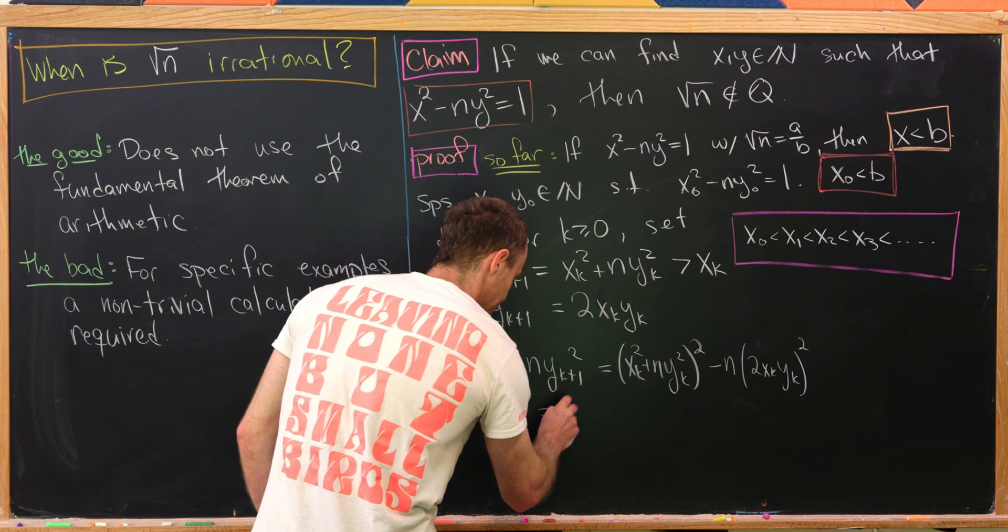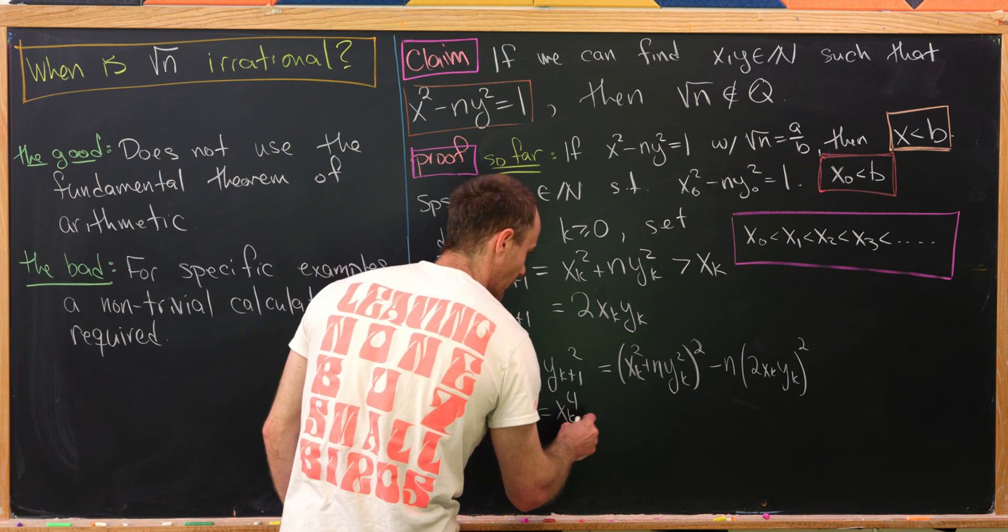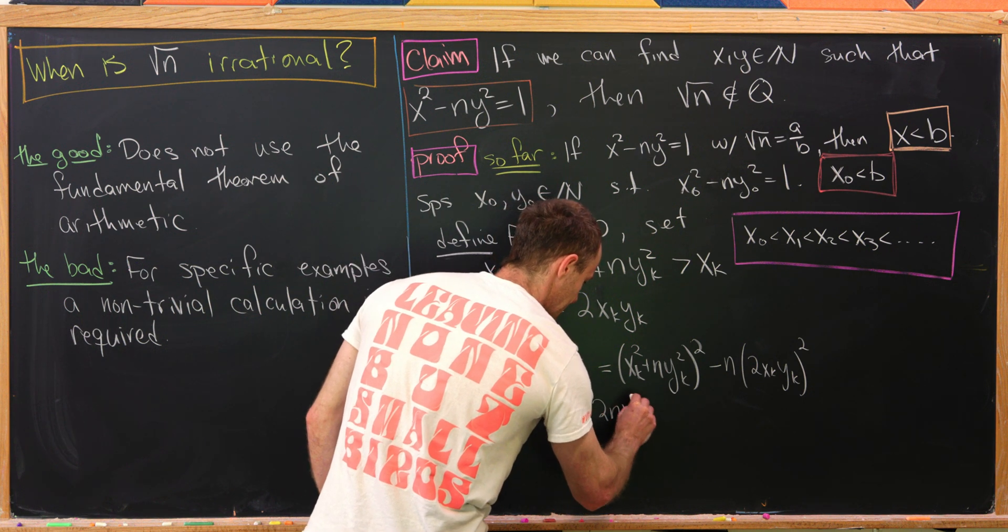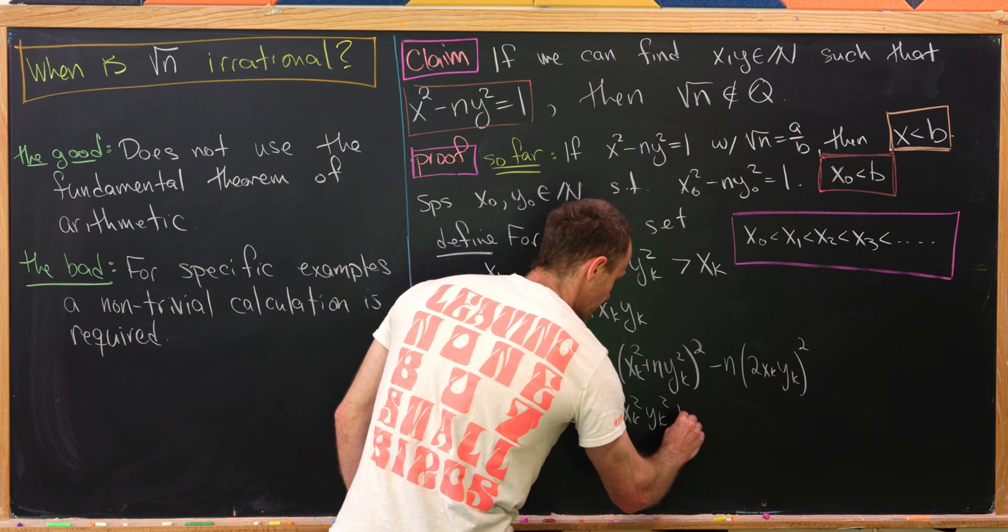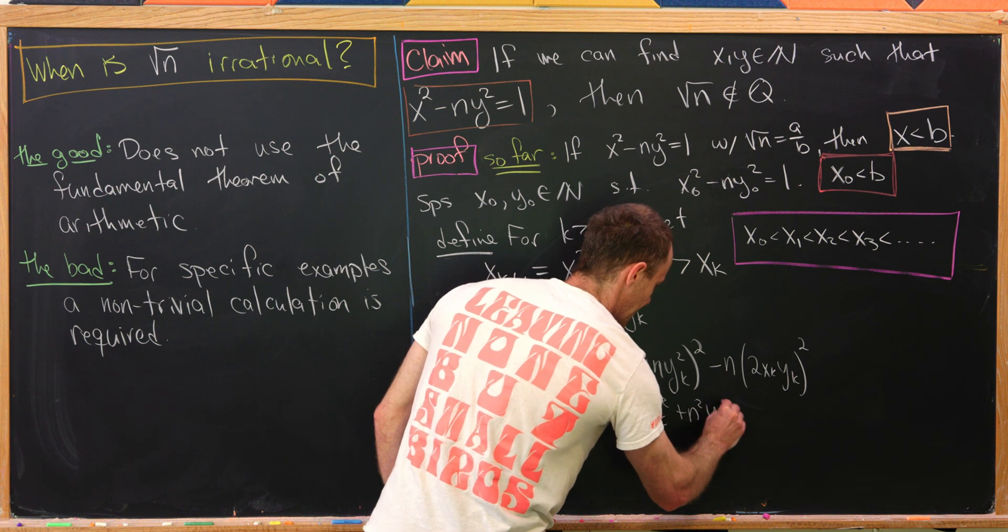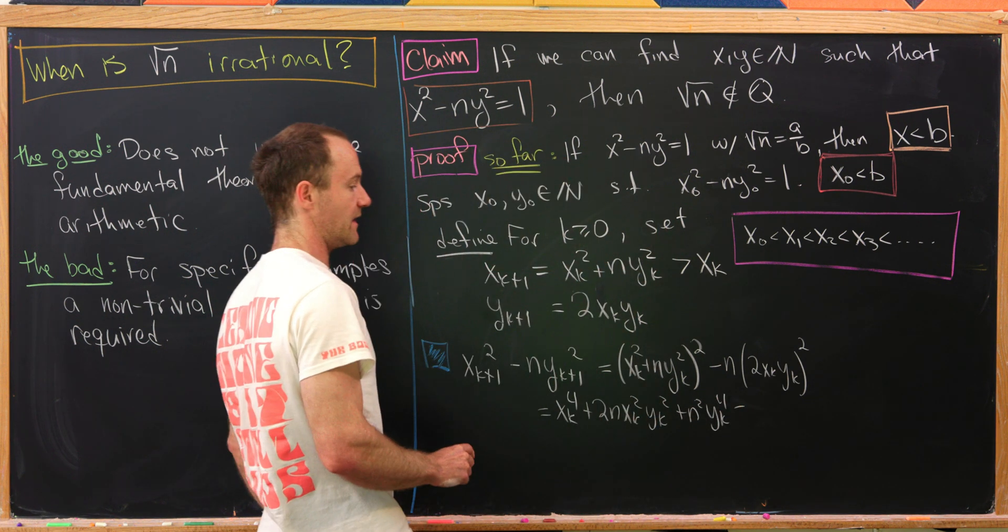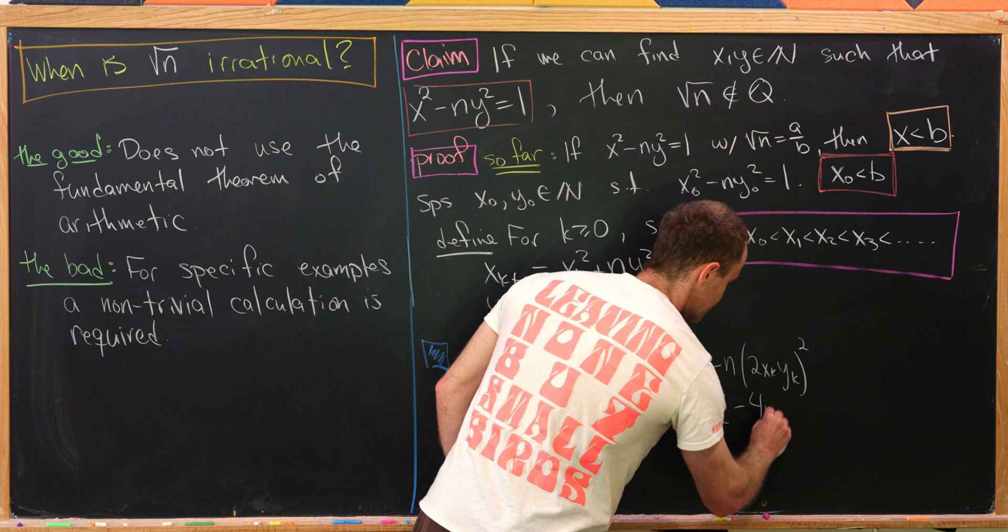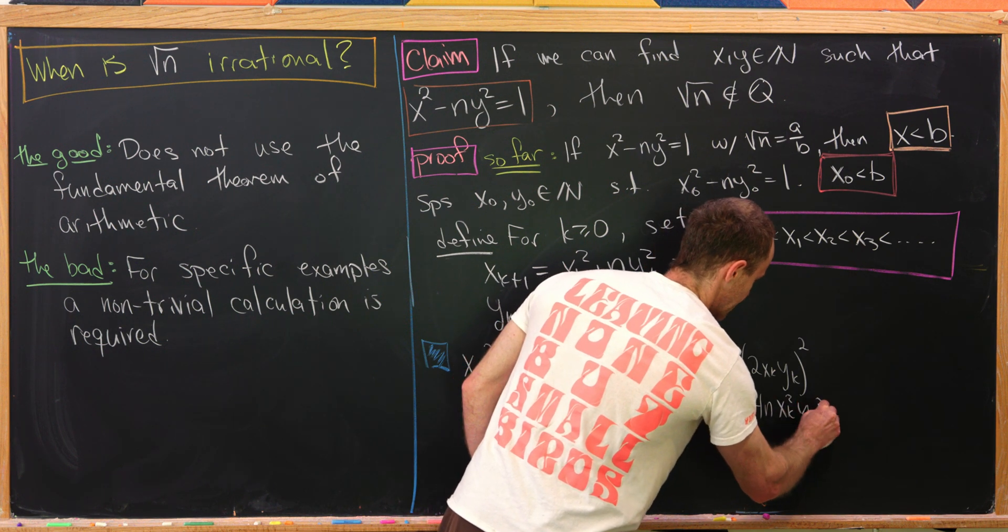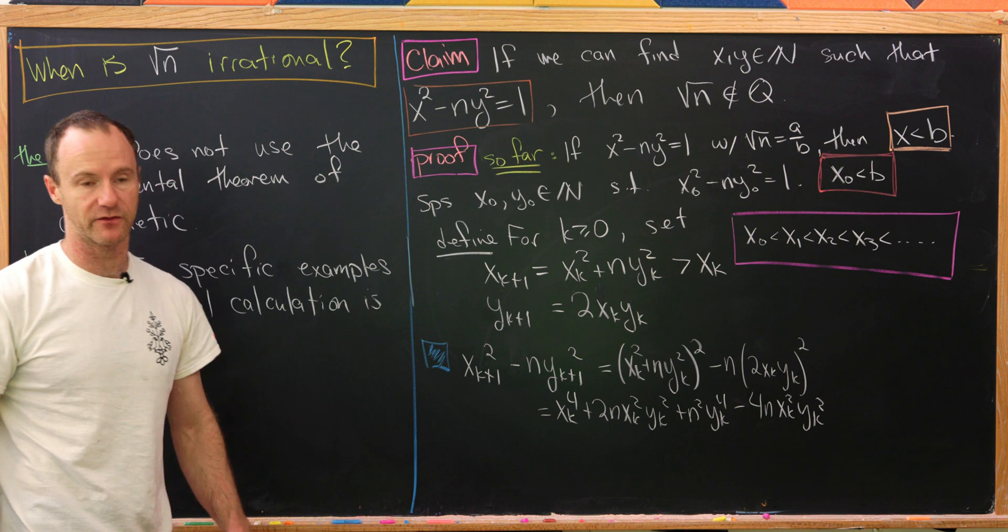Let's expand that. That will give us x sub k to the fourth plus 2n x sub k squared y sub k squared plus n squared y sub k to the fourth, and then minus 4 times n times x sub k squared times y sub k squared. That's kind of a mouthful.